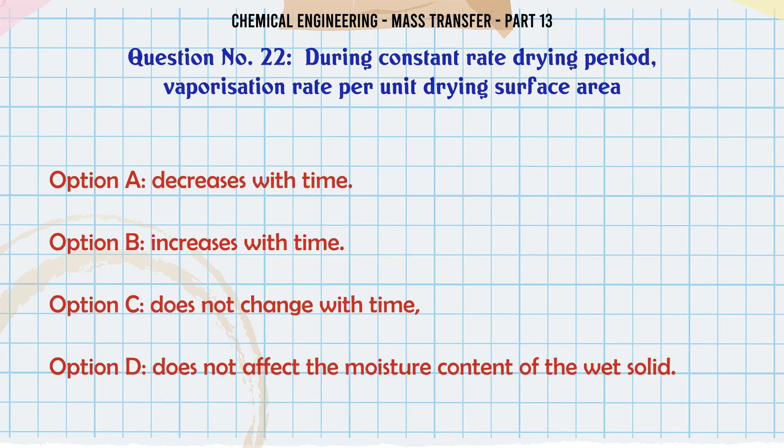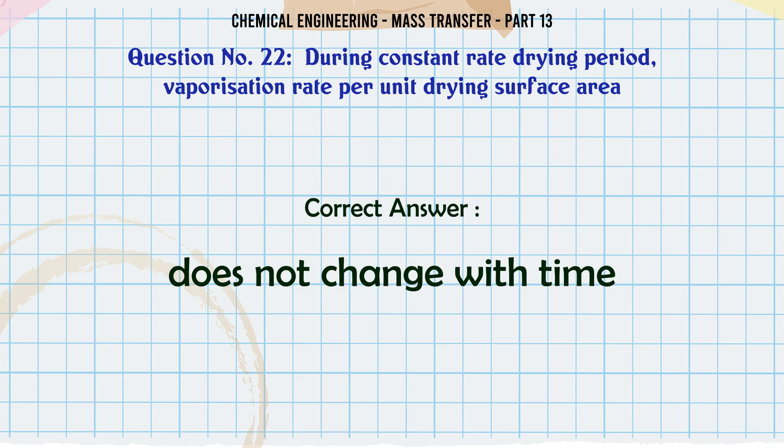During constant rate drying period, vaporization rate per unit drying surface area: A. Decreases with time. B. Increases with time. C. Does not change with time. D. Does not affect the moisture content of the wet solid. The correct answer is: Does not change with time.